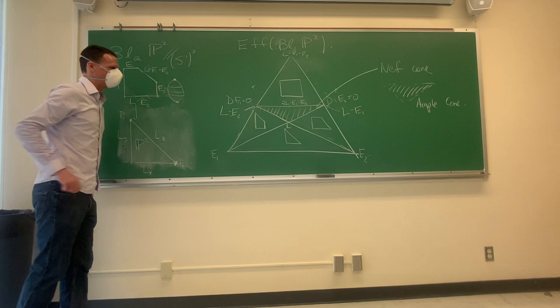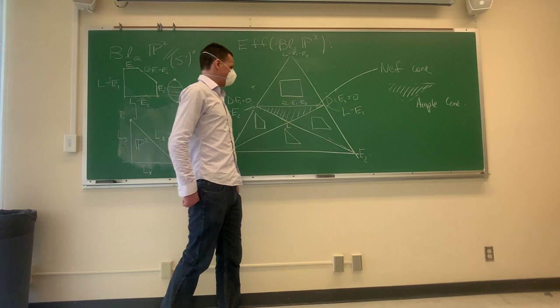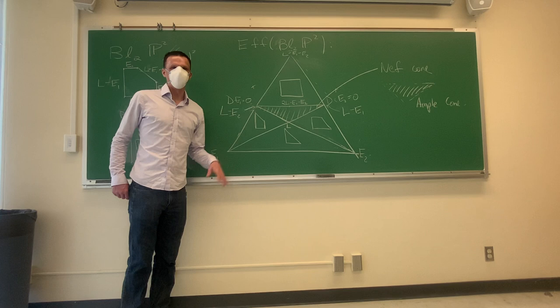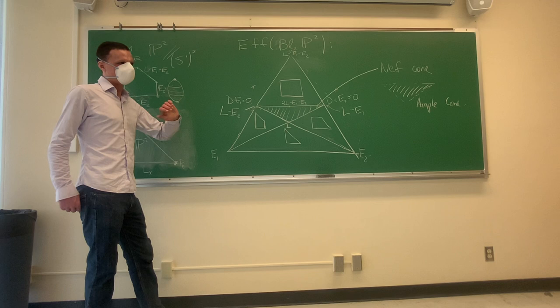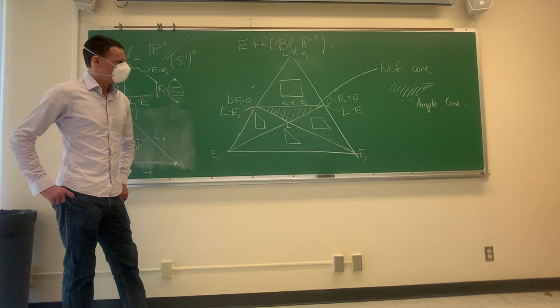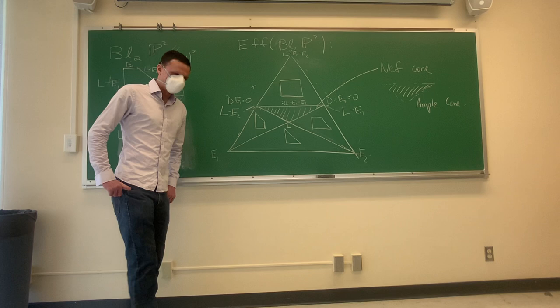We've just described the entire big cone — it's just the interior of this picture. The nef cone is the shaded region, and the ample cone is the interior of that. Because we're on a toric variety, everything that's nef is semi-ample and every ring is finitely generated. This is why toric varieties are the first example of what's called Mori dream spaces — all the nasty things you worry about with failure of finite generation don't happen, and all nef divisors are semi-ample.